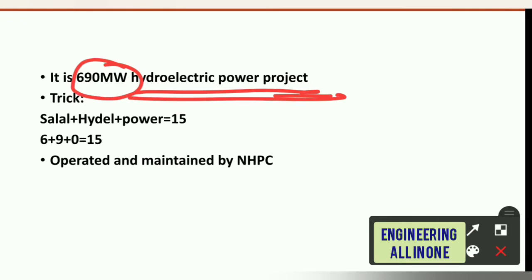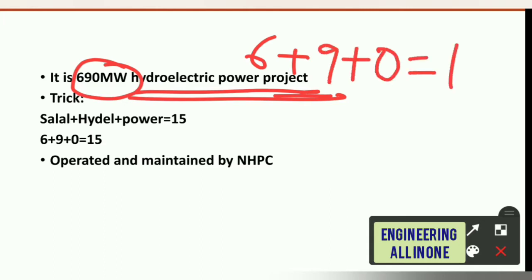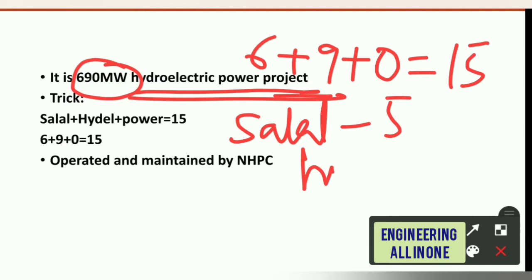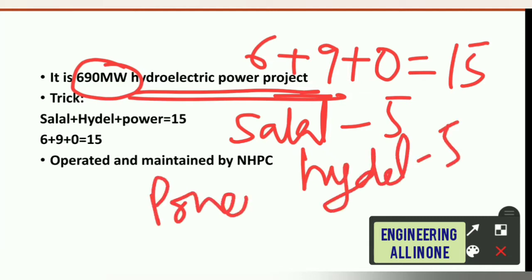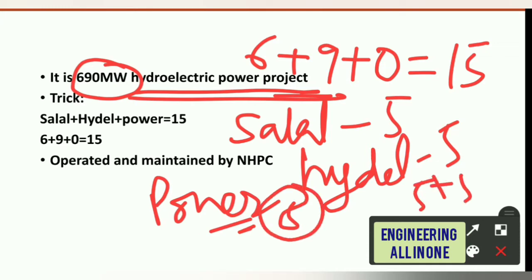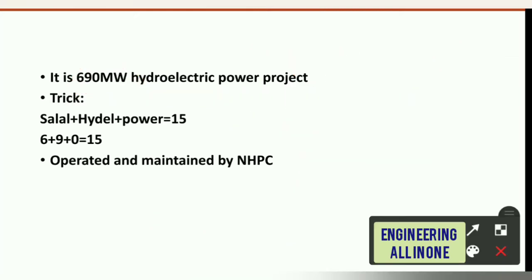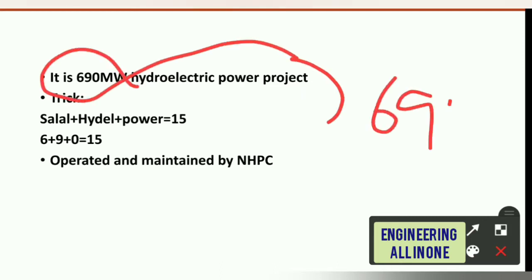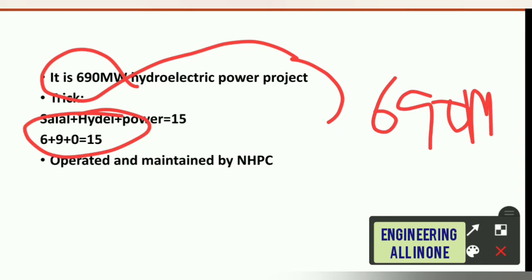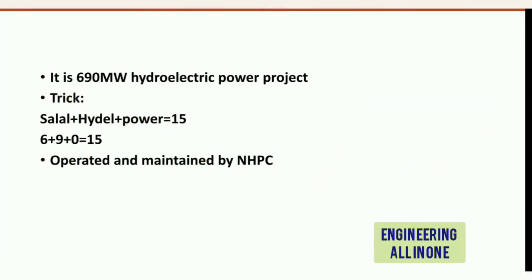Related to Salal Hydel power project: it is a 690 megawatt hydroelectric power project. To remember the capacity, note that 6+9+0 equals 15. Also, 'Salal' has 5 alphabets, 'Hydel' has 5 alphabets, and 'power' has 5 alphabets — 5+5+5 equals 15. This is just a trick to remember. An important point: it is operated and maintained by the NHPC.